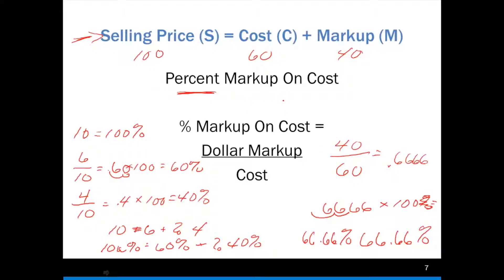We want to know what that percentage markup on cost is and to get that, we know we have to be given the dollar markup and we have to be given the cost. So we're not calculating a selling price here and we're only using these two bits of information, but we're deriving a different bit of information and it's the relationship between these two that gives us this percentage of markup on our cost.